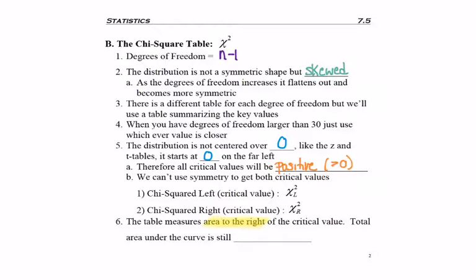Of a t-score and the z table measured area to the left of a z-score. So chi-squared is more like t, that we're measuring area to the right of, in this case, a chi-squared score or critical values specifically. But even though we have this right skewed shape, it still turns out that the total area under the curve is one, or a hundred percent.